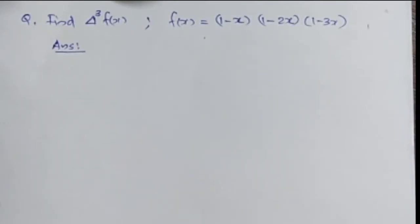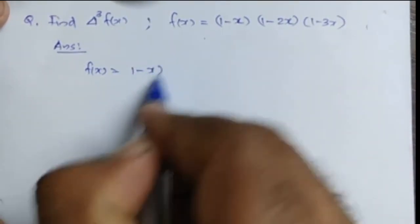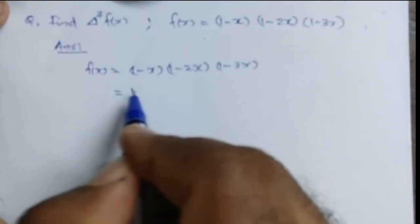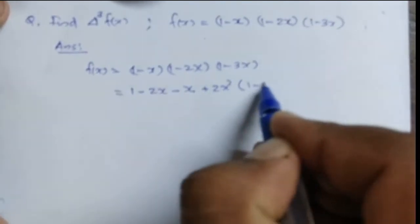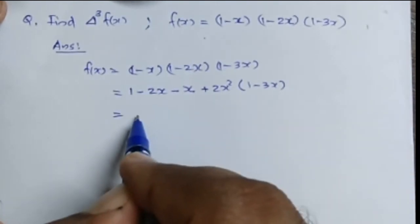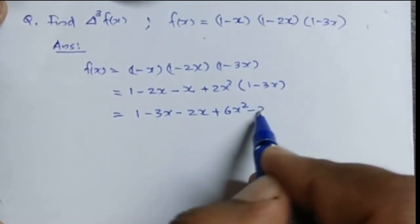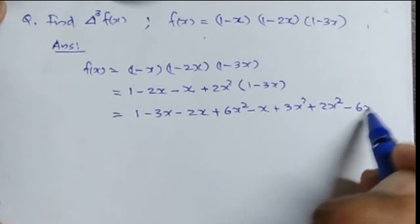Let's do another problem: find the third forward difference of f(x) = (1 - x)(1 - 2x)(1 - 3x). Opening the brackets, we get (1 - 2x - x + 2x²)(1 - 3x), which expands to 1 - 3x - 2x + 6x² - x + 3x² + 2x² - 6x³.